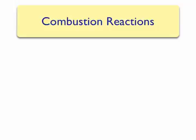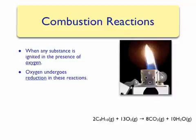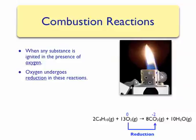The last type of redox reactions are combustion reactions. Combustion reactions occur when any substance is ignited in the presence of oxygen gas. In a combustion reaction, oxygen usually undergoes reduction. A good example is the reaction that occurs when you light a butane lighter. Oxygen goes from a zero oxidation number to a minus two oxidation number in both water and carbon dioxide, and is therefore reduced. Carbon, on the other hand, typically undergoes oxidation in combustion reactions.